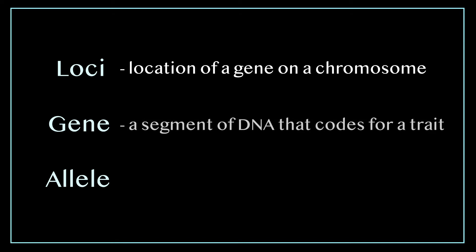Definitions. The first group of terms we need to understand before starting with genetics are genes, alleles, and loci. Loci is the location of a gene on a chromosome. Gene is a segment of DNA that codes for a trait and an allele is a specific form of a gene.